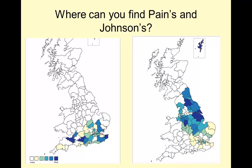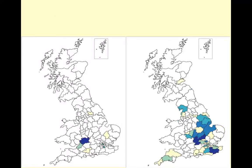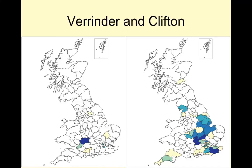This is important and it's understanding why this is occurring that's the key. The next few slides will highlight some different students and what you need to do is guess who from the class relates to these two maps. The one on the left is Sam's map - this is where the Verindas were in 1881. On the right we've got where the Cliftons were in 1881. You can see that different surnames have different levels of popularity in different regions.